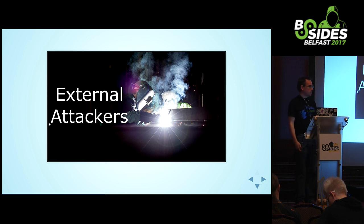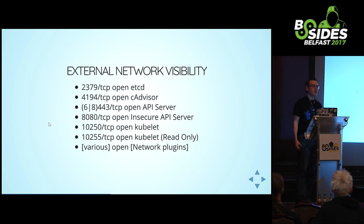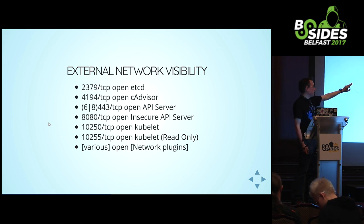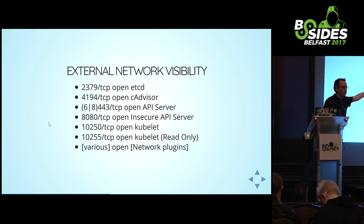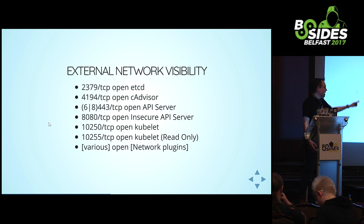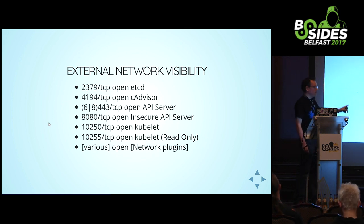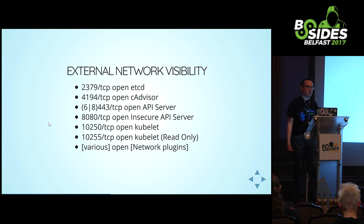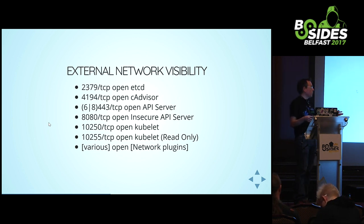As a tester, the first thing I do when given a network service is port scan it. Kubernetes gives you lots of potential: port 2379 is ETCD, 4194 is CAdvisor, the API server could be on 6443, 8443, or 443 depending on the setup. Then there's the insecure API server - that's actually what they call it in Kubernetes land - and yet people will enable it sometimes. Ports 10250 and 10255 are the kubelet. Network plugins also have their own ports - some use BGP, some run their own ETCD instances on ports like 4001.